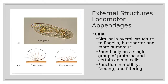Another locomotor appendage is cilia, which is also mostly present in protozoa. Cilia are hair-like structures used for movement. They live in water and stroke their cilia — like a power stroke — to move.